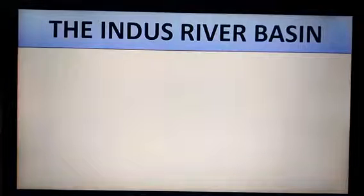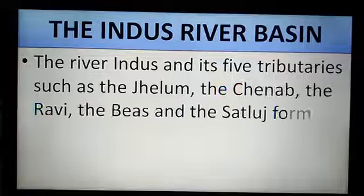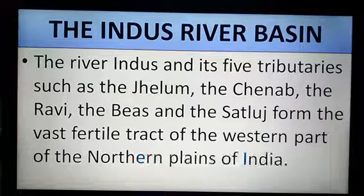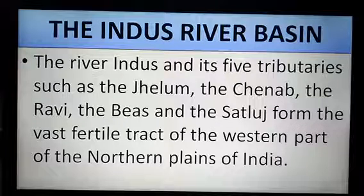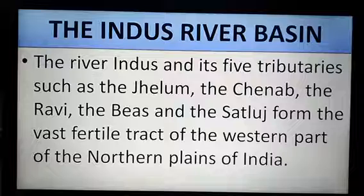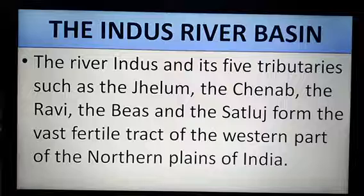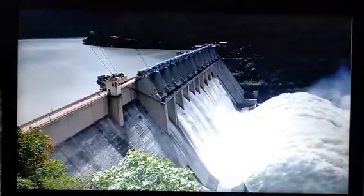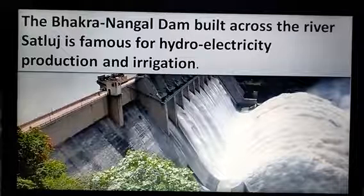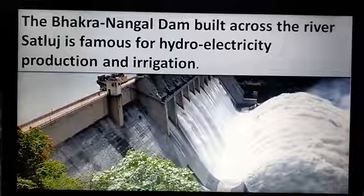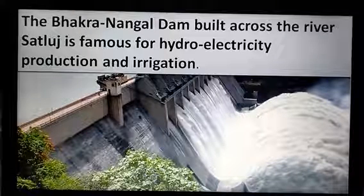The river Indus and its five tributaries — the Jhelum, the Chenab, the Ravi, the Beas and the Sutlej — form the vast fertile tract of the western part of the northern plains of India. Some important cities of the region are Chandigarh, Ludhiana, Ambala and Amritsar. The Bhakra Nangal Dam, built across the river Sutlej, is famous for hydroelectricity production and irrigation.